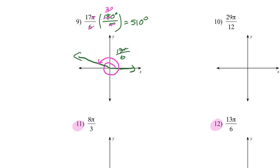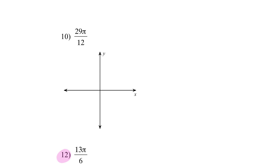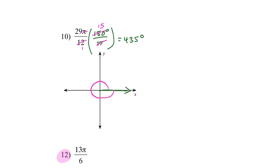For the next radian angle, convert to degrees by multiplying times 180 over π — the π cancels out. Simplifying: this becomes 1, this becomes 15, and 29 times 15 is 435 degrees. Draw initial side in standard form, open it up: 90, 180, 270, 360 — I need 75 more, so close to here. Draw my angle and arrows — that's an angle of 435 degrees.